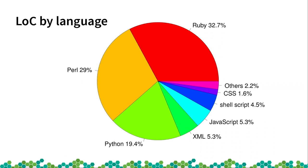Here the lines of code by language, taking into account OSC and not only the GitHub repository from OBS. That's why we also have Python.